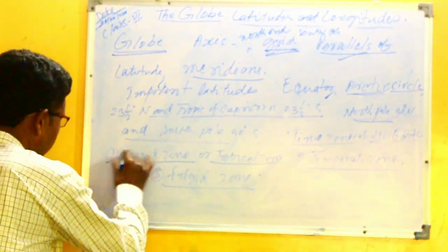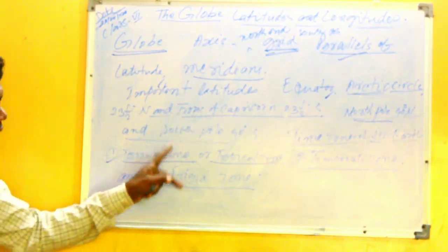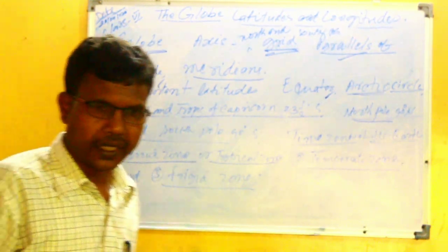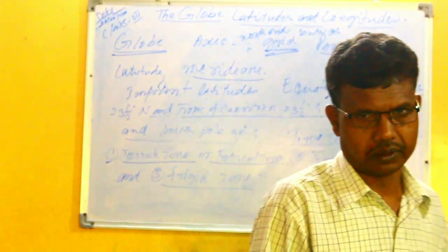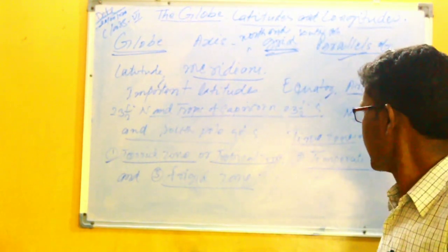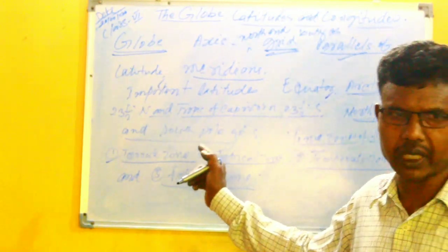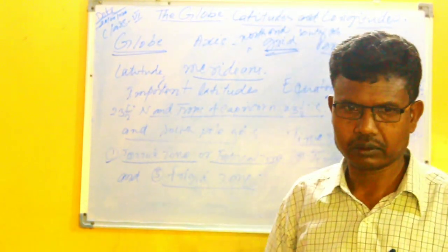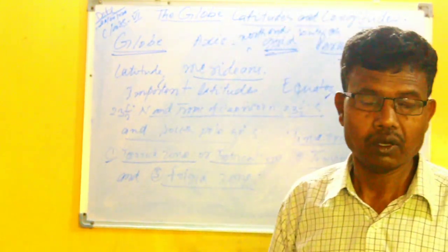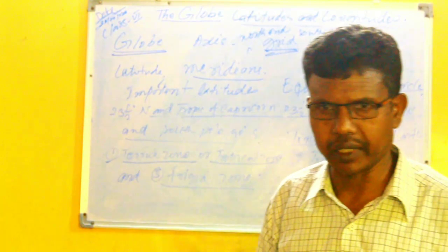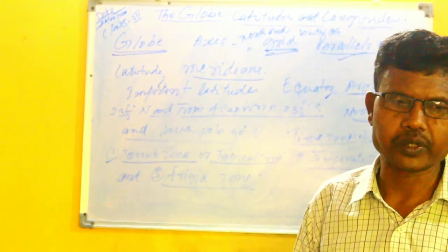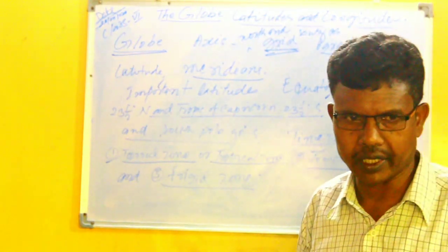Now let us see the first zone, that is the torrid zone. As the name suggests, it is a hot zone. It lies between the Tropic of Cancer and the Tropic of Capricorn. It is the hottest zone on the Earth, as it receives more or less direct rays of the sun throughout the year.